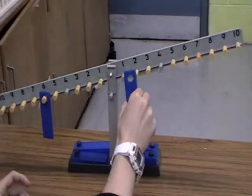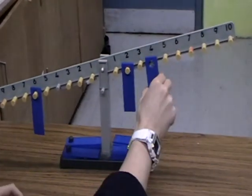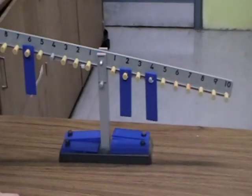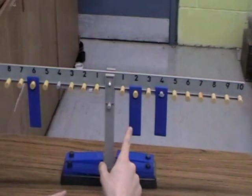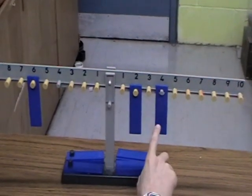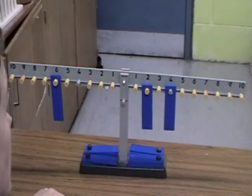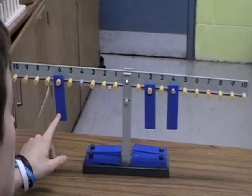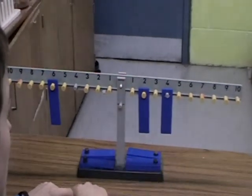I can place one weight at the 2 mark and one weight at the 4 mark. This gives us a total moment of 1 times 2 plus 1 times 4, which is 6 units on the right. There are 6 units of moment on the left and 6 units of moment on the right, and the lever is balanced.